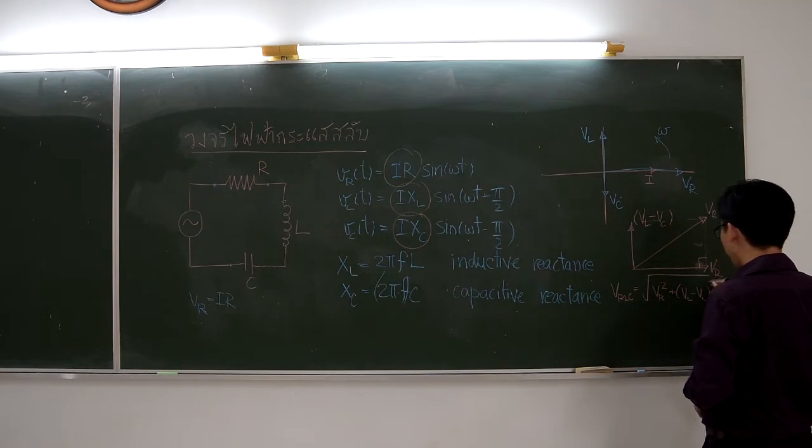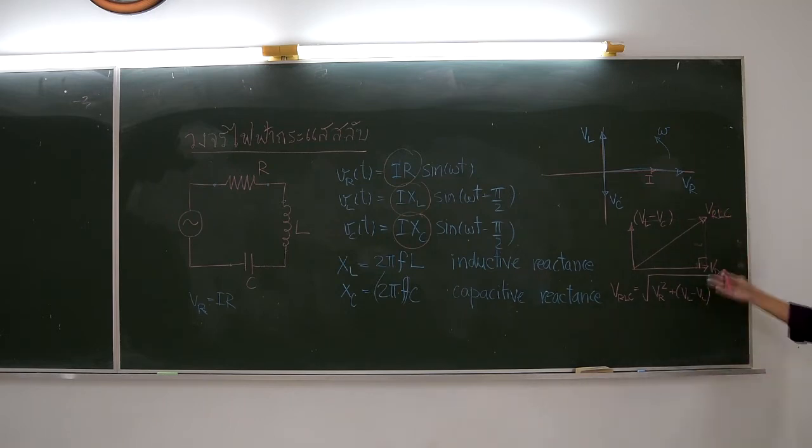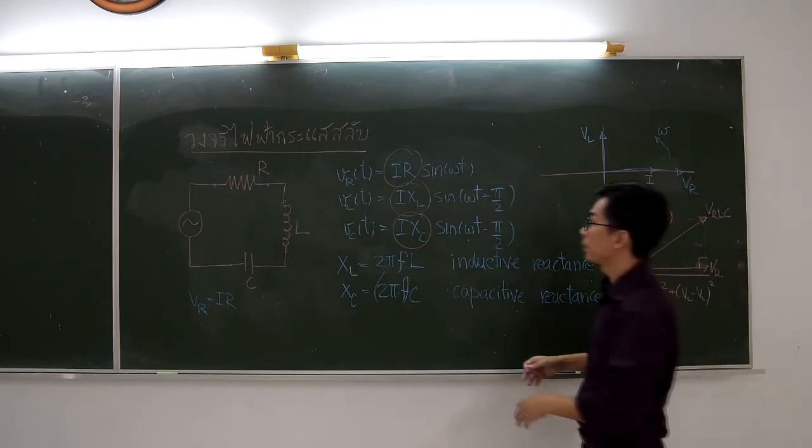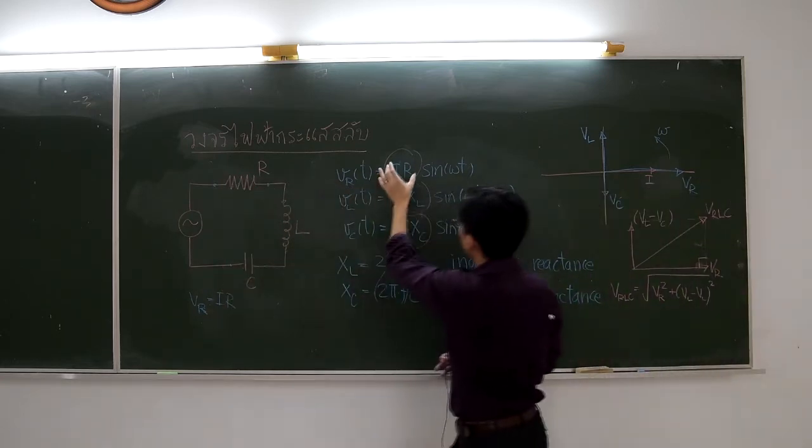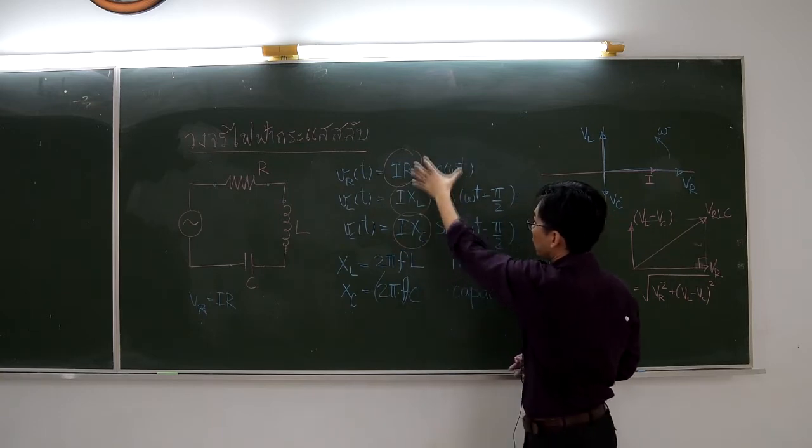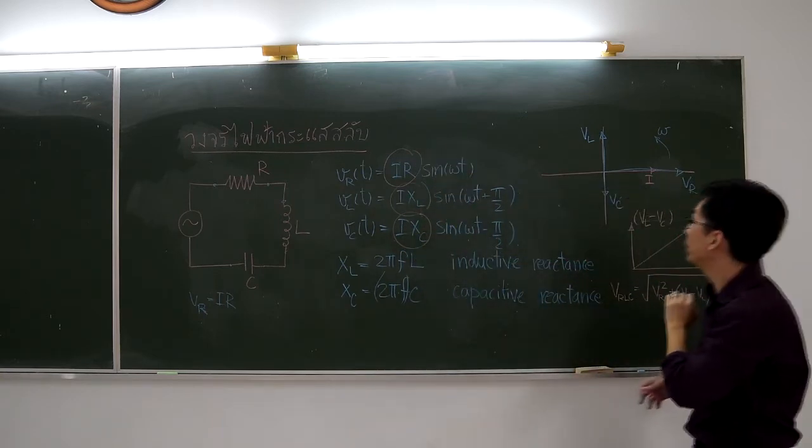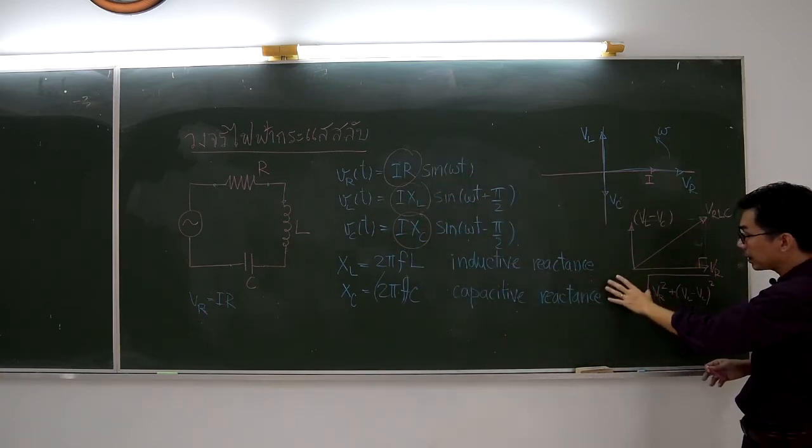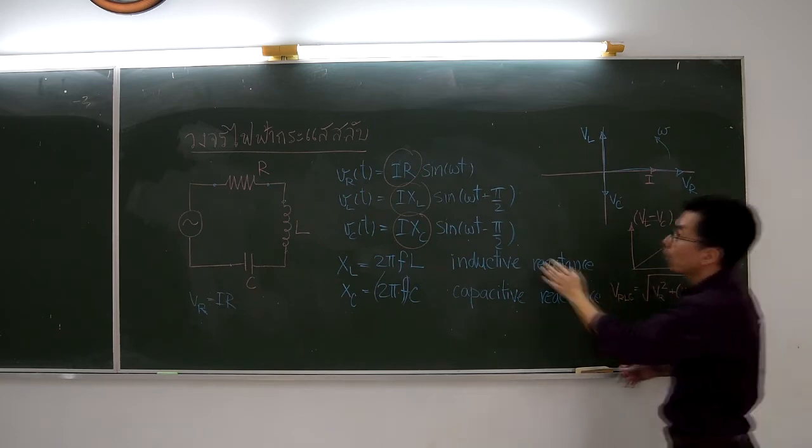In part 1 of the experiment, we will see if this is correct or not. We will measure uppercase VR, VL, and VC. Then, we will see that VRLC follows this equation.